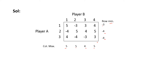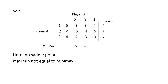Now find the maximum of row minimum — that is the maximin value — which is minus 3. And the minimum of column maximum — that is the minimax value — which is 4. If a payoff matrix has a saddle point, the maximin value will be equal to the minimax value. Here, maximin value is not equal to minimax value, so there is no saddle point.